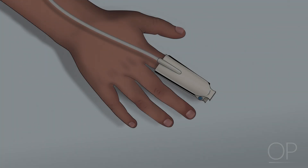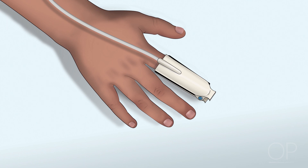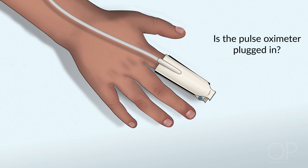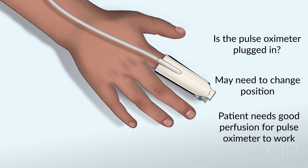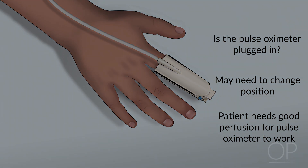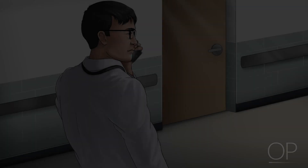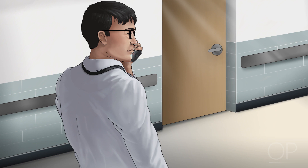Always troubleshoot mechanical things, such as the pulse oximetry. Is it actually plugged in and picking up? Changing the pulse ox out and changing its position can be helpful, but remember that if you have poor perfusion, your pulse ox will not read either. While you are on the phone with the nurse, you should ask the following questions.